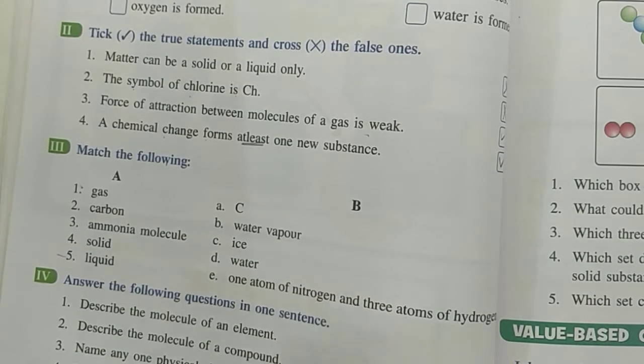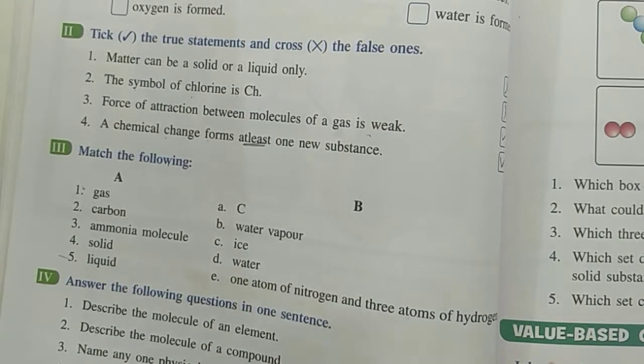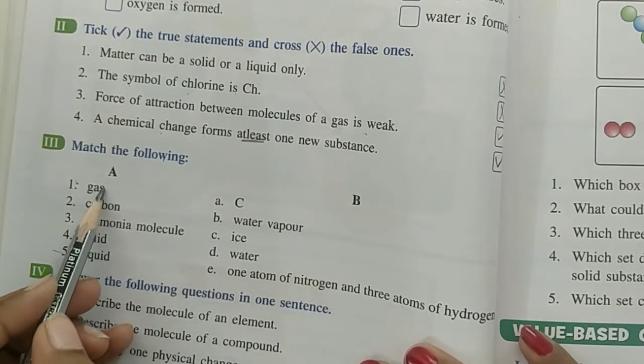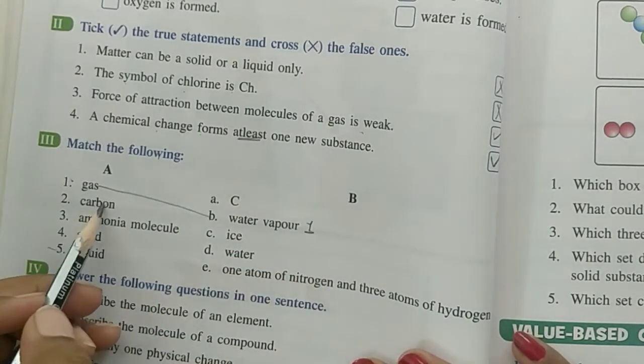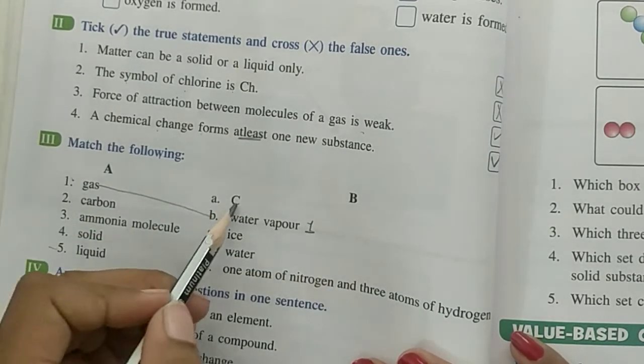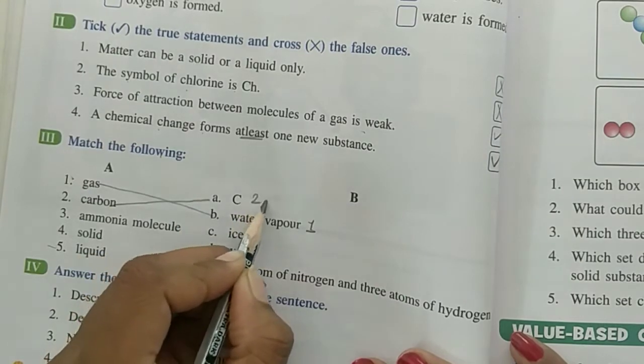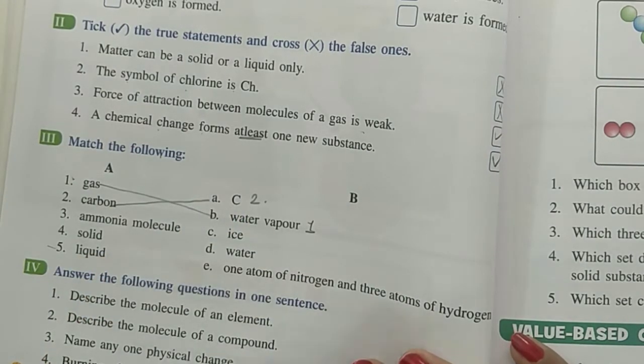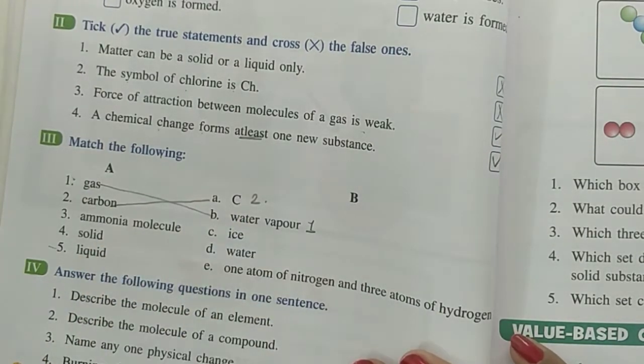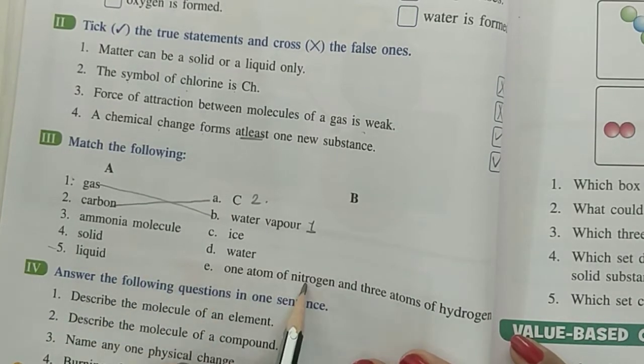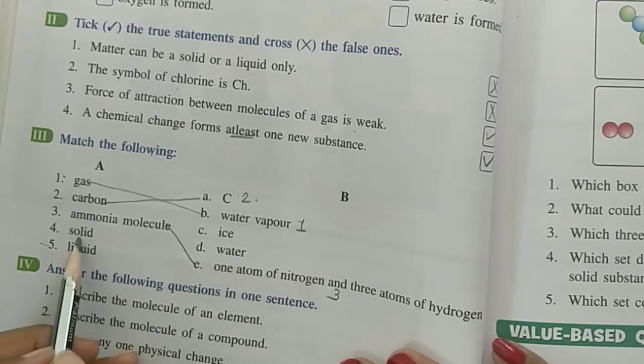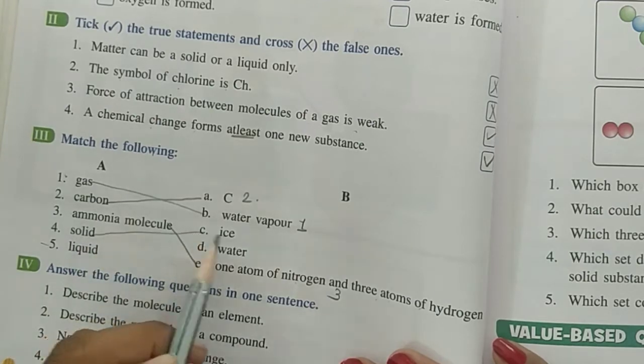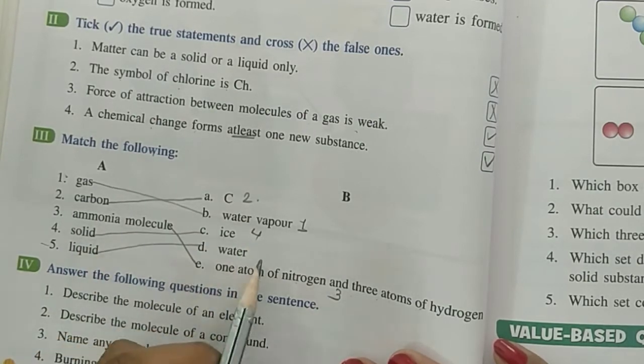Gas is water vapor. So the answer is B-1 is A. Then carbon, carbon's symbolic name is shown here. So the second is C. Now ammonia molecule is made from NH3, one atom of nitrogen and three atoms of hydrogen. So 3 is E. Then solid is ice. Liquid is water. So 5.